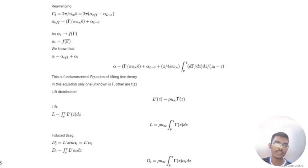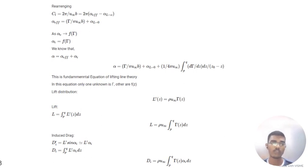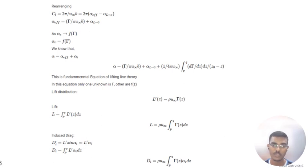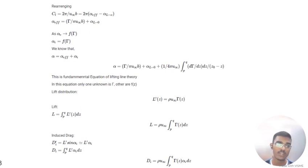After solving, since alpha-effective is a function of gamma and alpha is also a function of gamma, and knowing alpha equals alpha-effective plus alpha-i, we ultimately get: alpha equals gamma divided by (pi times free stream velocity times wingspan), plus alpha at zero-lift, plus 1 over (4 pi U-infinity) integrated from p to q of (d-gamma/dz) dz divided by (z minus z). This is the fundamental equation of lifting line theory, where the only unknown is gamma and all other terms are functions of z.